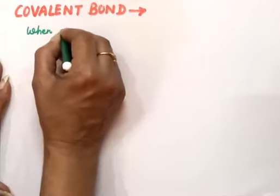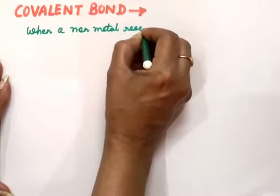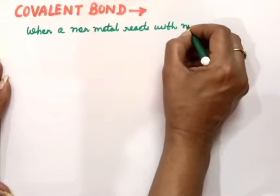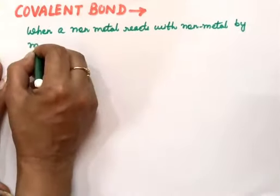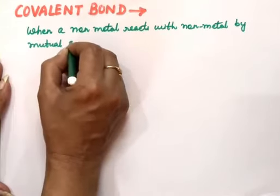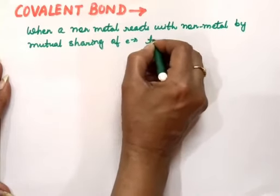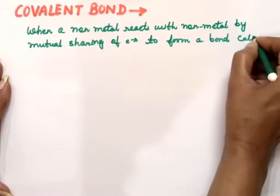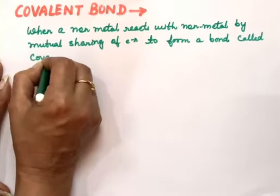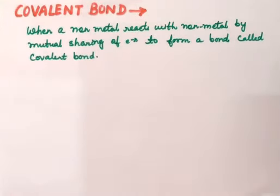A covalent bond forms when a nonmetal reacts with a nonmetal by mutual sharing of electrons. The word 'mutual' must be in the definition. The bond formed by mutual sharing of electrons between two nonmetal atoms is known as a covalent bond.